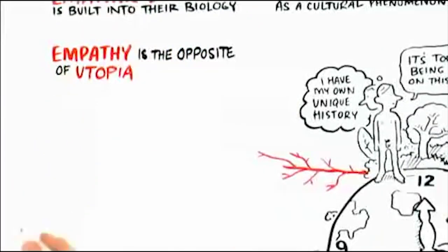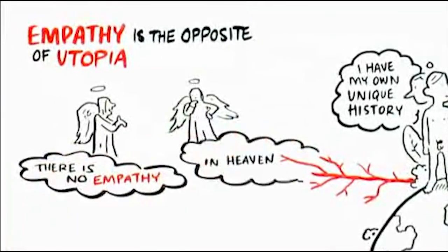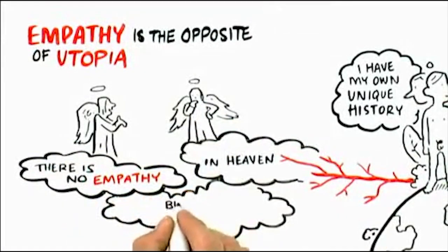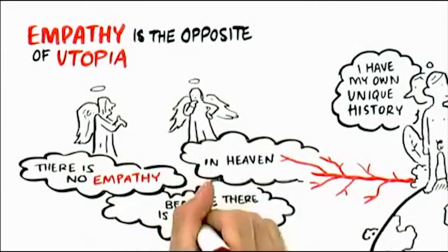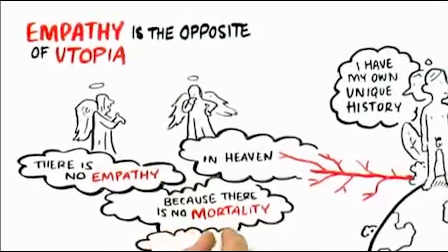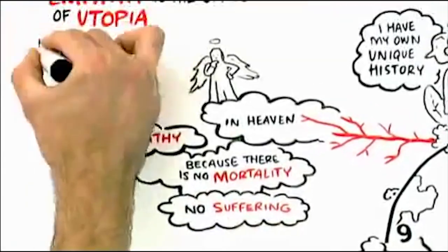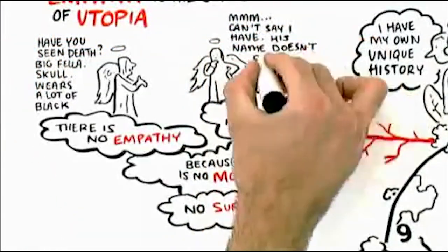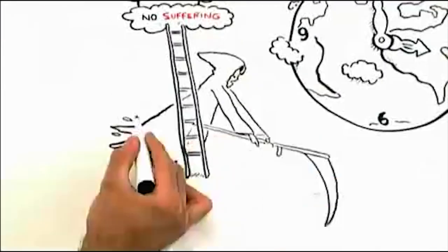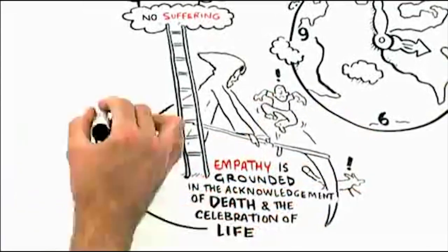Empathy is the opposite of utopia. There is no empathy in heaven. I guarantee you. There isn't any empathy in heaven because there's no mortality. There's no empathy in utopia because there is no suffering. Empathy is grounded in the acknowledgement of death and the celebration of life and rooting for each other to flourish and be.